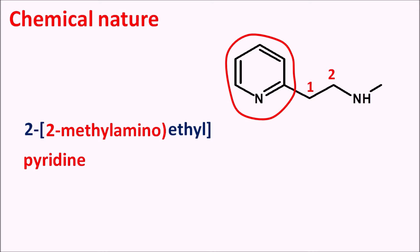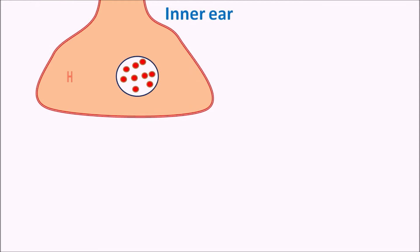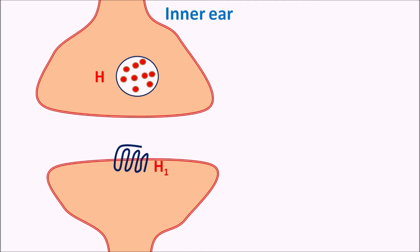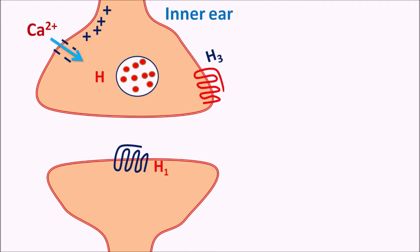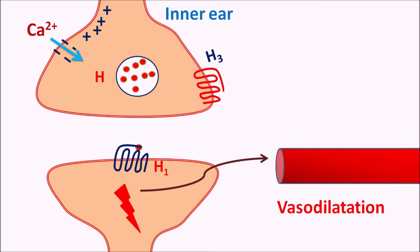Now let us see how this drug acts. Within the inner ear, histamine is an important neurotransmitter which can be released from the presynaptic neurons and it can act on the postsynaptic neurons as well as target organs. These postsynaptic neurons express H1 receptors. Similarly, the presynaptic neurons express H3 receptors, which are auto-inhibitory in nature. When an action potential reaches the presynaptic neurons, calcium can enter and produce exocytosis so that histamine is released and acts on H1 receptors, carrying the impulse up to the blood vessels supplying the inner ear.